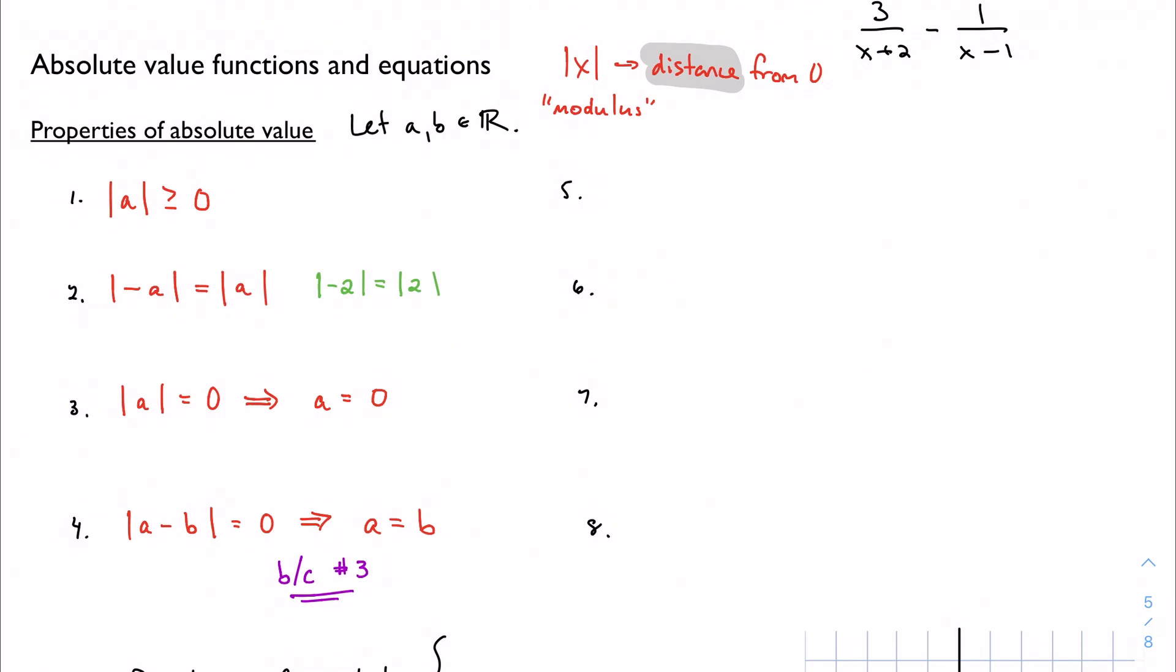A couple other rules. We want to define our arithmetic operations on absolute value. So products and quotients are going to work just like normal products and quotients. If I can multiply outside the absolute value, I can multiply inside the absolute value. Likewise, I can do this with division, with the catch that b can't be zero. Of course, cannot divide by zero.